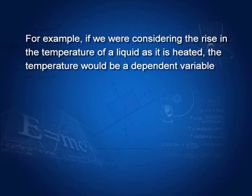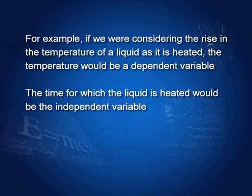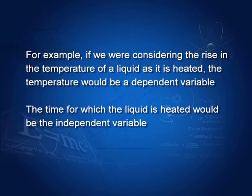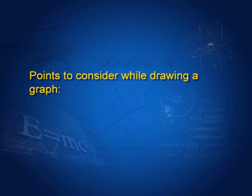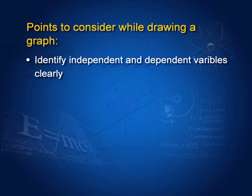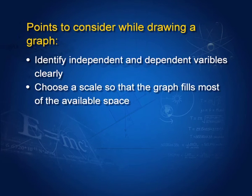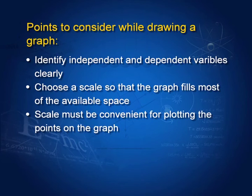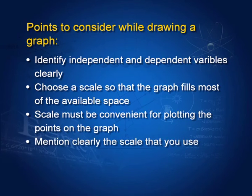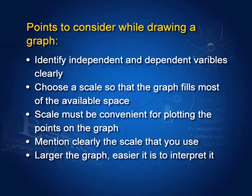Remember, temperature is not always an independent variable — it depends upon the situation. For example, if we were considering the rise in temperature of a liquid as it is heated, then temperature would become a dependent variable and the time for which the liquid is heated would become the independent variable. Points to consider while drawing a graph: first, identify independent and dependent variables clearly. Then choose scales so that the graph fills most of the available space. Scales must be convenient for plotting and clearly mentioned on the graph. Larger graphs are easier to interpret.